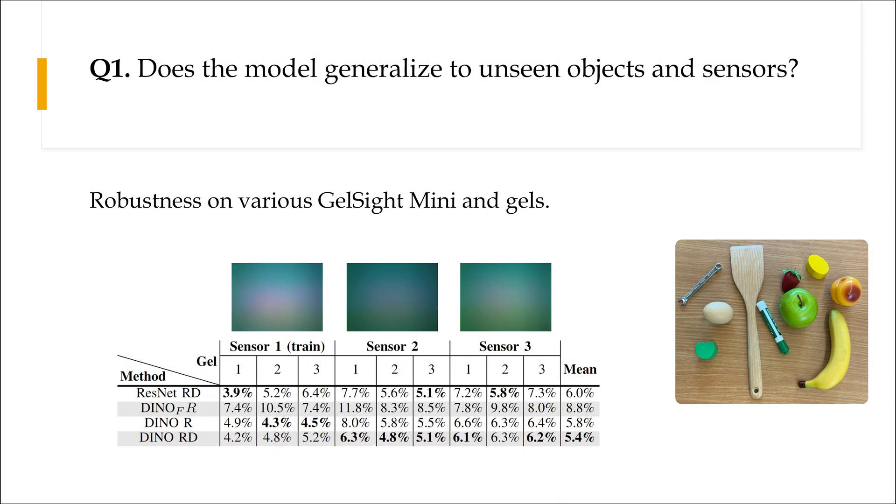To assess our model's robustness against variations in GelSight Mini sensors, we compare its performance across different combinations of sensors and gels. These variations in physical properties inevitably led to slightly higher errors on unseen sensors.